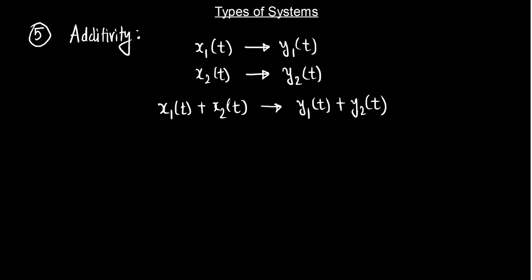For a system to be additive, the two inputs must give you the same outputs. If you add two inputs, you must get the corresponding outputs added at the output. So x1(t) giving y1(t) and x2(t) giving y2(t) means x1(t) plus x2(t) must give y1(t) plus y2(t), and this must be true for any inputs and all values of t.